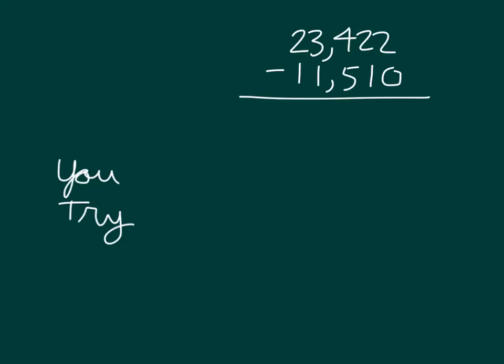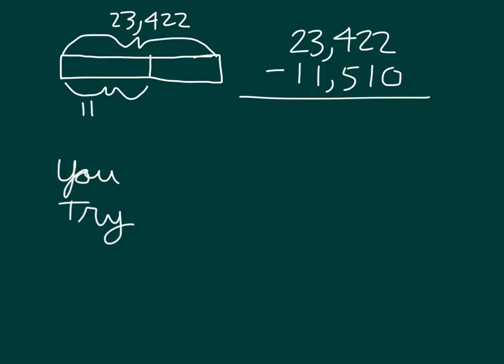Can you draw a tape diagram to model this problem to show what you're solving for? Pause the video while you do your work. Did you draw one bar to represent the number that you are subtracting from? Did you label it correctly? Then what do you do? You are subtracting eleven thousand five hundred ten, so it's probably about there or so. You do have to label it. And then you, of course, label what it is that you were solving for.